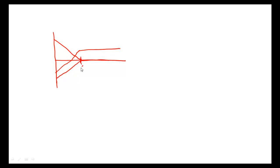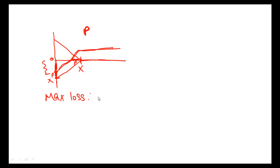The price marked here is the strike price. The distance P represents the price paid for the put option. So the maximum loss for the short put is X minus P, where X is the strike price and P is the premium received. The short put has the most loss when the stock price comes down to zero — so X minus P is the maximum loss for the short put.